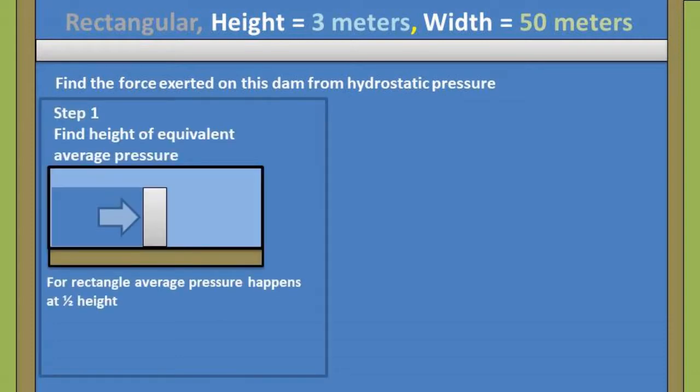The first step of this problem is to find the height of the equivalent average pressure on the dam. For a rectangular dam, the average pressure happens halfway between the highest and lowest water level.